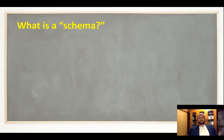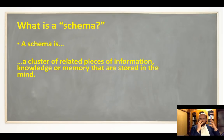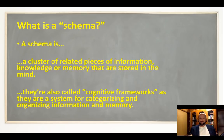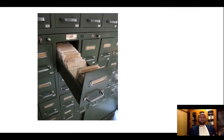So what is a schema? The technical definition: it's a cluster — a grouping of related pieces of information, knowledge, or memory stored in the mind. It's important to use the word 'mind' rather than 'brain' — the brain is the biological part, the neurons and neurotransmitters, whereas the mind is the cognitive part, the thinking. Schemas are also called a cognitive framework — a structure showing how things are grouped and categorized.